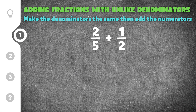The first problem gives us two fifths plus one half. In order to add these we have to have the same denominator, so we have to change both denominators into the least common multiple that they share. The easiest way to do this is to list the multiples of both denominators until we get a number that matches.